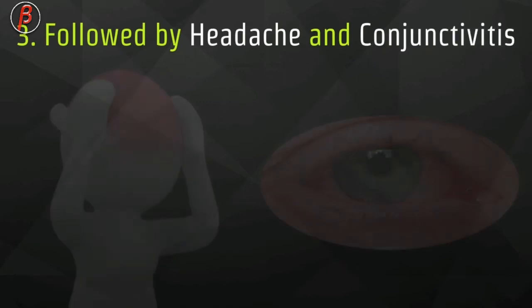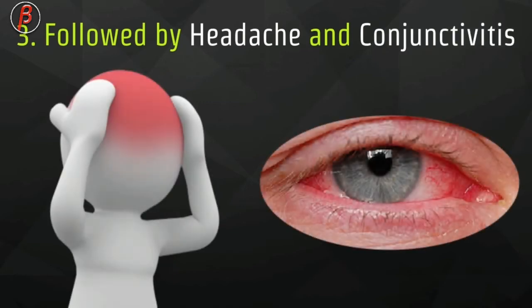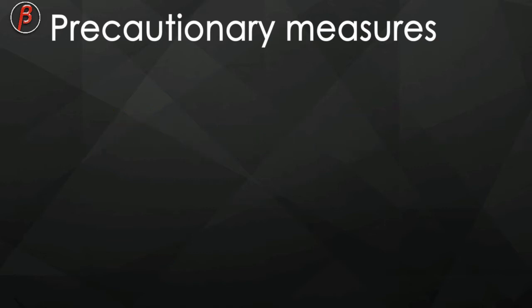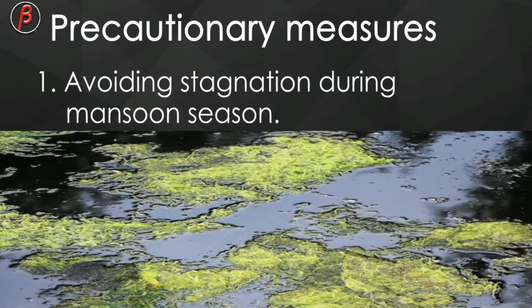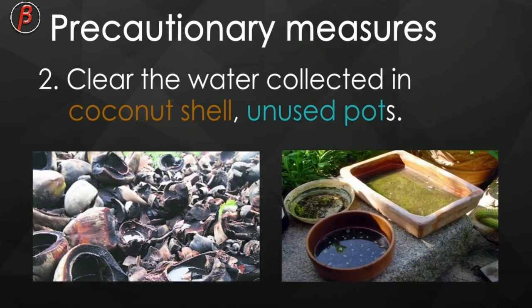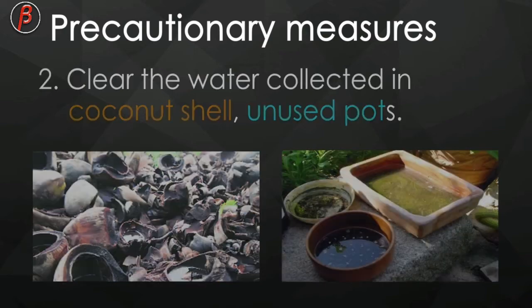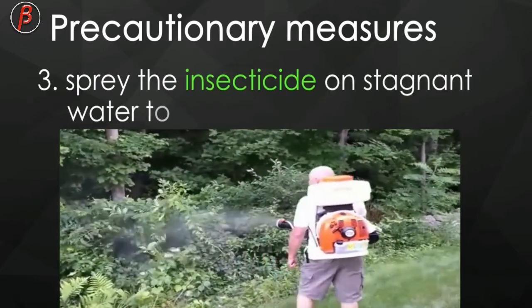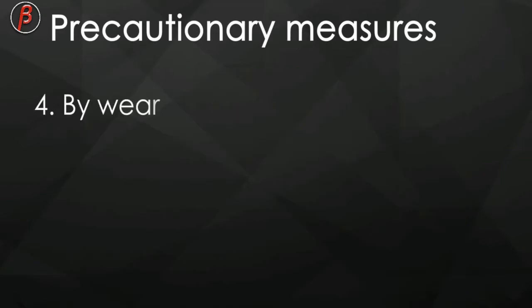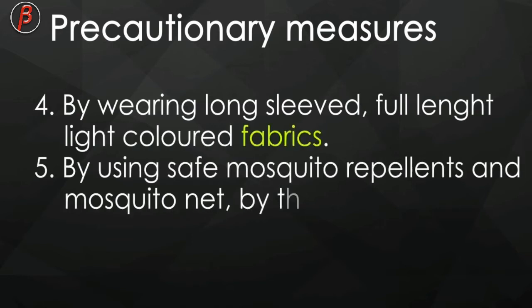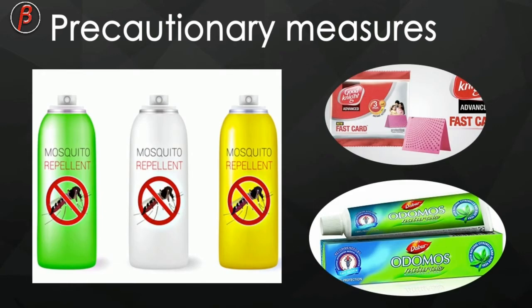Joint pain is followed by headache and conjunctivitis, which means redness and pain in the eye. We have to take precautionary measures for this disease because there is no proper treatment for chikungunya according to WHO. We can avoid mosquitoes by avoiding stagnation during monsoon season. Clear the water collected in coconut shells and unused containers because it provides habitat for larvae. Spray insecticides over stagnant or shady places to kill immature larvae. By wearing long-sleeved clothes or using mosquito repellents, we can avoid mosquitoes. It is better to use mosquito nets instead of chemicals.